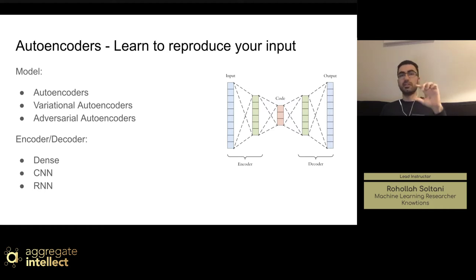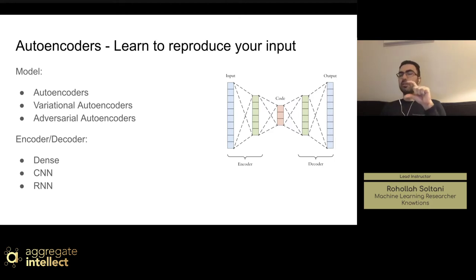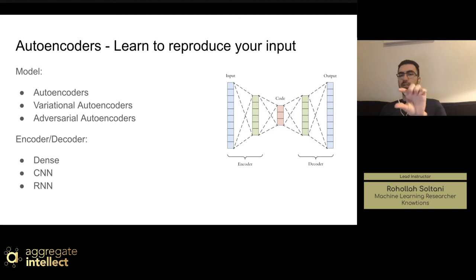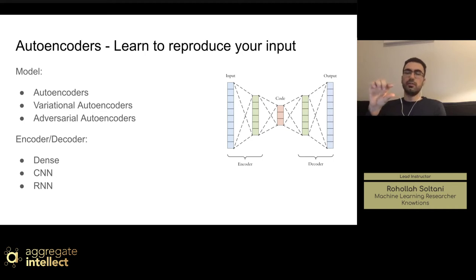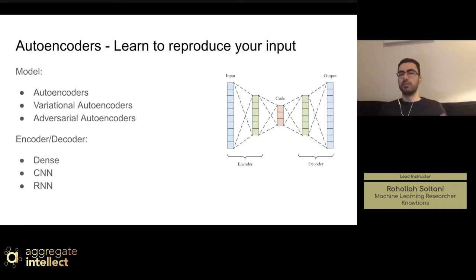Instead of having, let's say, a thousand or a hundred dimensions, if you can compress it into 10 dimensions and still be able to reproduce it again, then you can say you just need 10 dimensions — that's all the features you need. From that point, you can use that code or embedding of the input for different tasks as well. You can define what the number or size of the code or features should be and try different things to find the best number for your model.